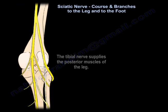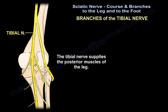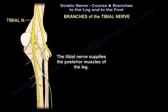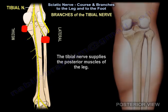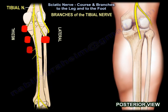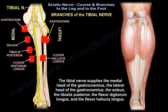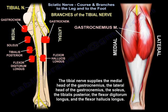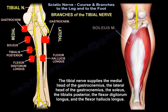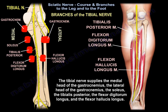The tibial nerve supplies the posterior muscles of the leg: the medial head of the gastrocnemius, the lateral head of the gastrocnemius, the soleus, the tibialis posterior, the flexor digitorum longus, and the flexor hallucis longus.